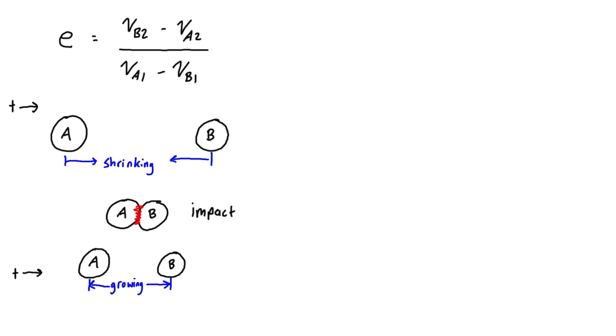By bigger I mean more positive, a greater value that's more in the positive direction. They can actually be physically moving towards each other, like A moving to the right and B moving to the left, or if they're both moving to the right, then as long as v_a1 is bigger than v_b1, eventually they'll catch up and impact.